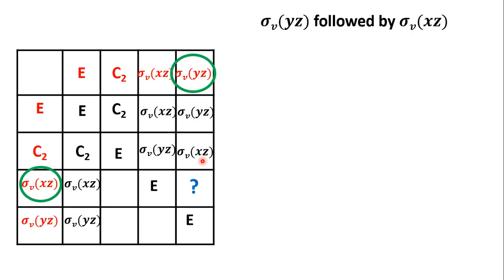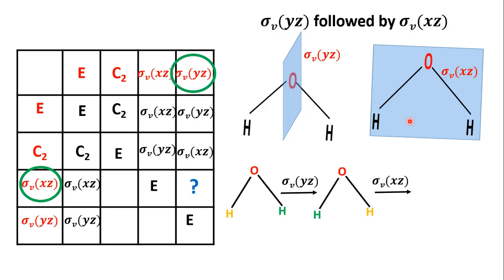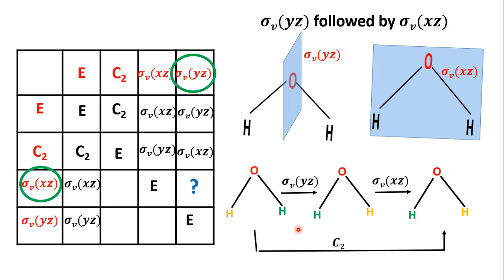Next, σVyz followed by σVxz: σVyz cuts through the oxygen atom perpendicular to the molecular plane, so reflection interchanges the two hydrogen atoms. σVxz is the molecular plane cutting through all atoms, so reflection about this plane does not interchange the hydrogen atoms. First do σVyz — the two hydrogen atoms are interchanged: yellow goes right and green comes left. Then doing σVxz produces no change. The net result is an interchange equivalent to C2.